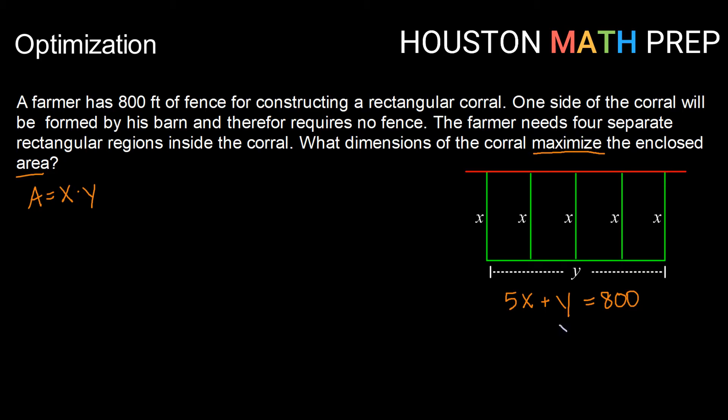So doing that, I would get y is equal to 800 minus 5x. If I now replace that into my area function, I will have that area equals x times (800 minus 5x). Or if I distribute that x,